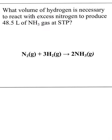All right, let's just do one more because this one's kind of like a backwards one. What volume of hydrogen is necessary to react with excess nitrogen to produce 48.5 liters of NH3 at STP? So first step, see if the equation's balanced. Yep, same as the last slide. We are balanced. Then we turn the given number into moles.